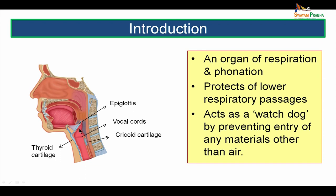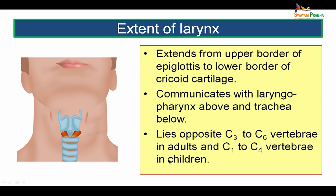The inlet of larynx and the three cartilages of larynx are the epiglottis, the thyroid cartilage and the cricoid cartilage. The larynx extends from the upper border of the epiglottis up to the lower border of the cricoid cartilage. It communicates with the laryngopharynx above and with the trachea below. It lies opposite the third to sixth cervical vertebrae in adults and opposite the first to fourth cervical vertebrae in children.